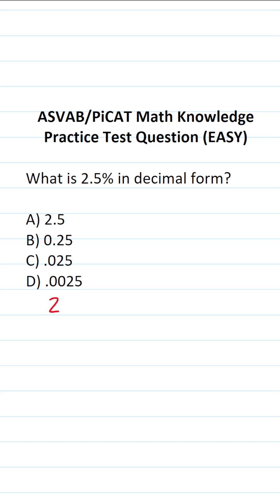So we want to write 2.5% in decimal form. The first thing we're going to do is get rid of this percentage symbol, so we're going to write it as 2.5. To write a percentage as a decimal, you're going to take your decimal and simply move it one, two places to the left. So that's going to become 0.025. We can see that 2.5% in decimal form is 0.025, so the answer to this one is C.